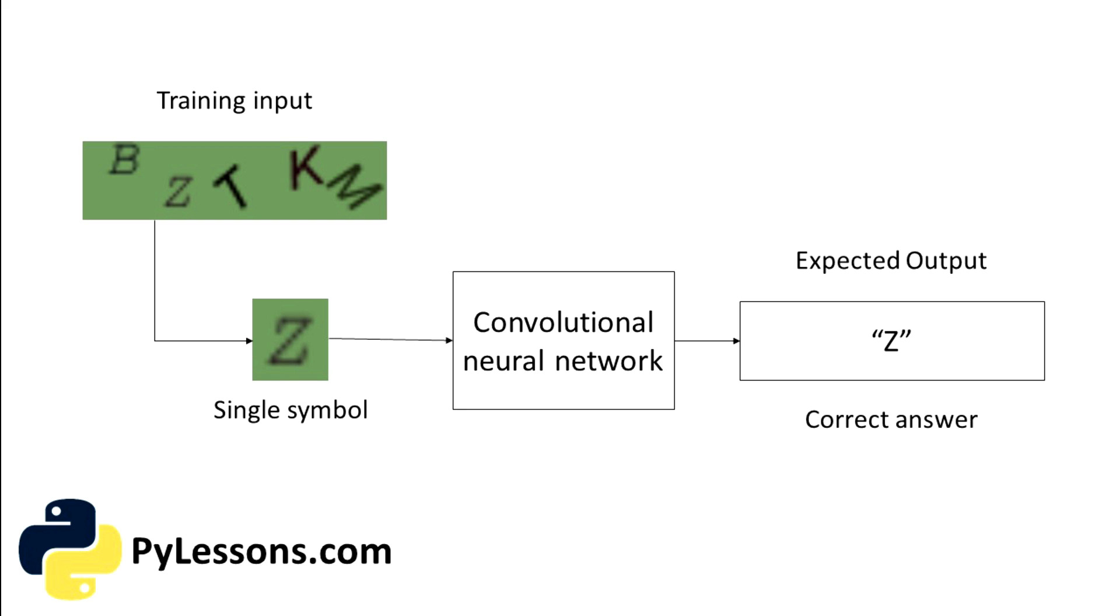So then our model would look like this: we take a CAPTCHA image. From that CAPTCHA image, we take each letter and we give it to our convolutional network. And at the end, we'll give, for example, five letters to our convolutional neural network. And as a result, we receive five correct answers.